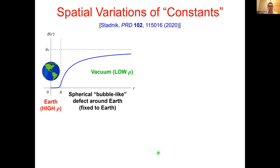This environmental dependence of physical constants has very important implications for terrestrial experiments. Inside Earth there is a comparatively large energy density, while outside Earth there is a comparatively small density. The scalar field phi is strongly screened inside Earth and close to its surface, but far away from Earth the scalar field tends toward its preferred value phi_0 at the minimum of the quartic potential. What we basically have is a spherical bubble-like defect surrounding Earth, which is expected to be fixed to Earth as a quasi-permanent fixture.